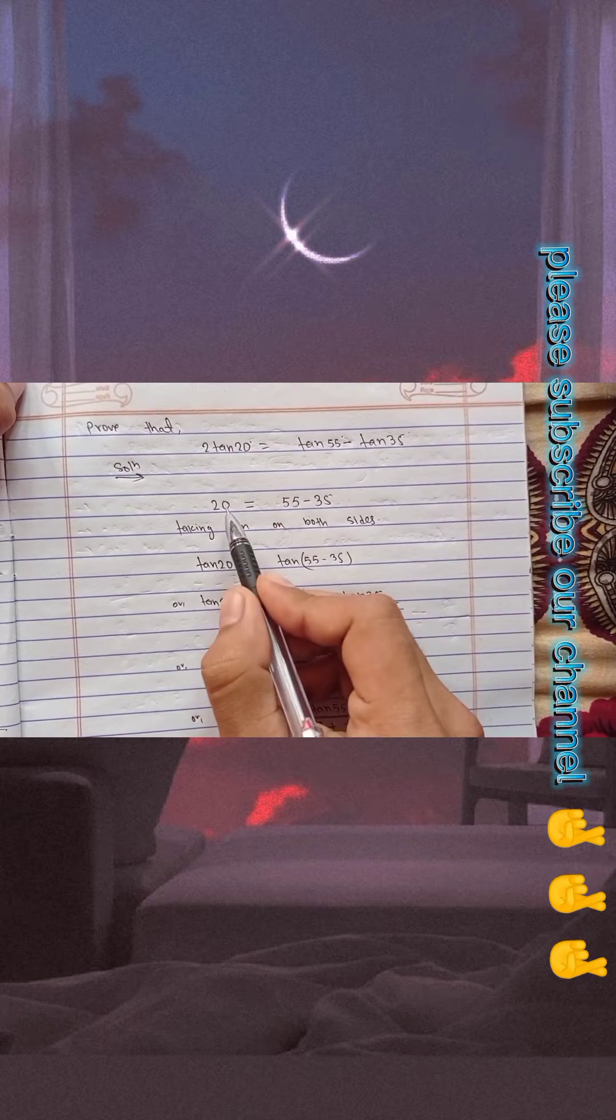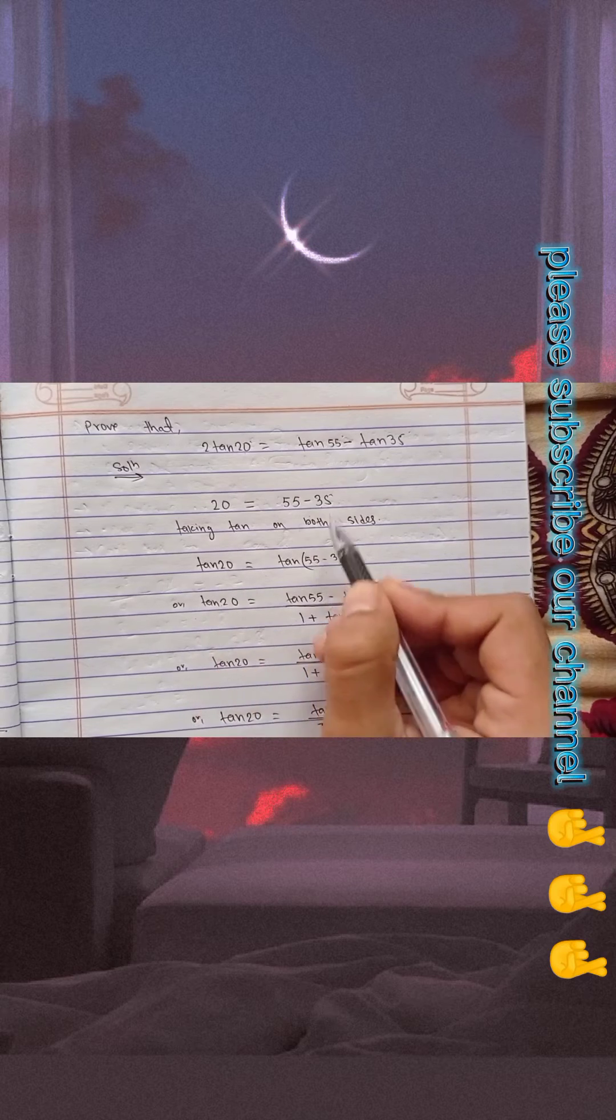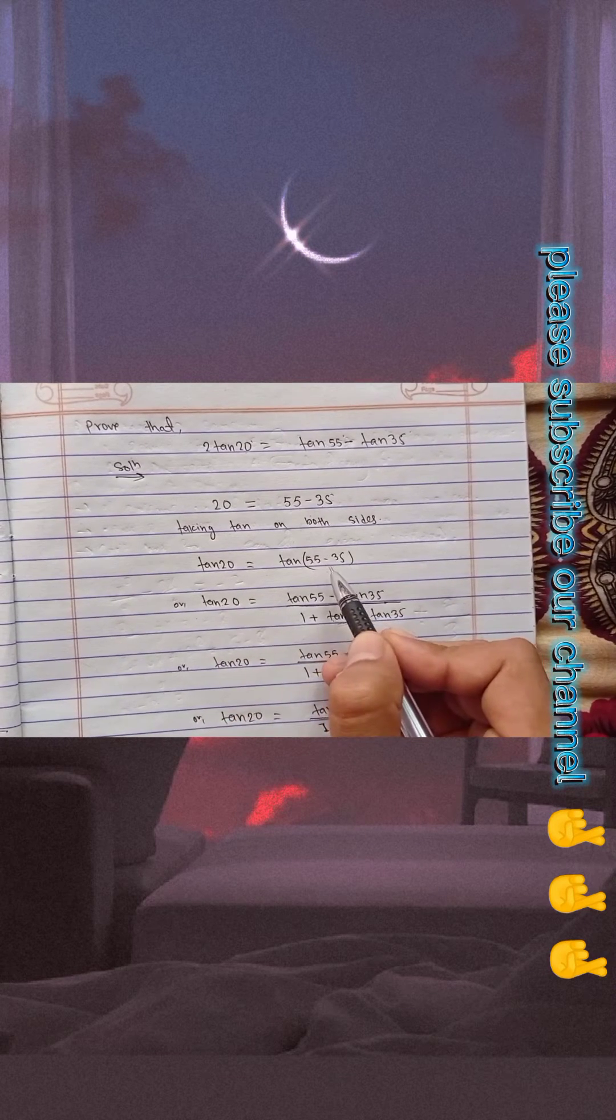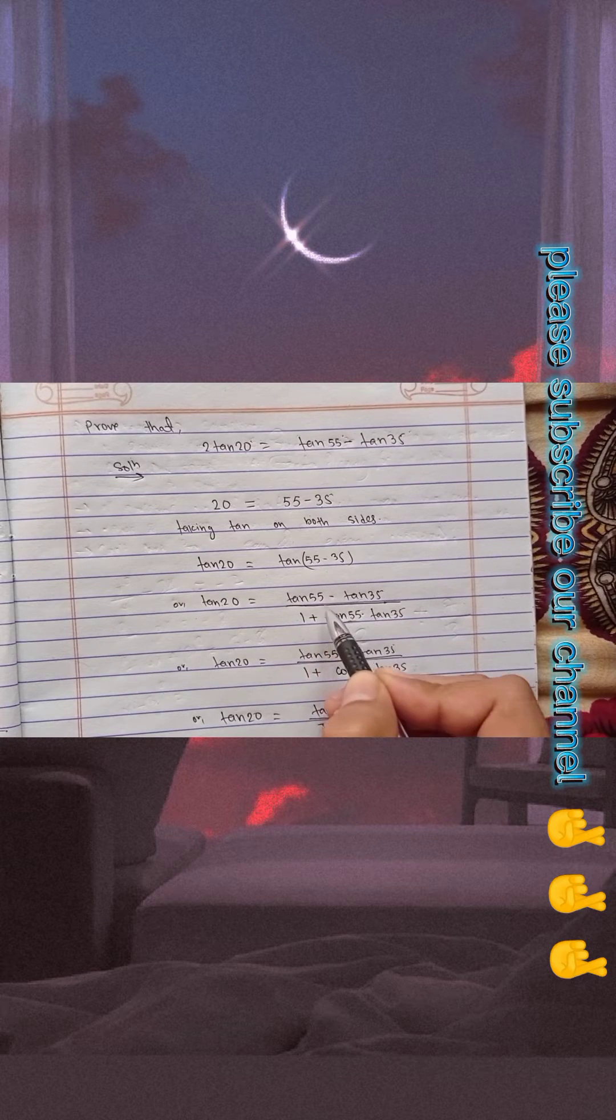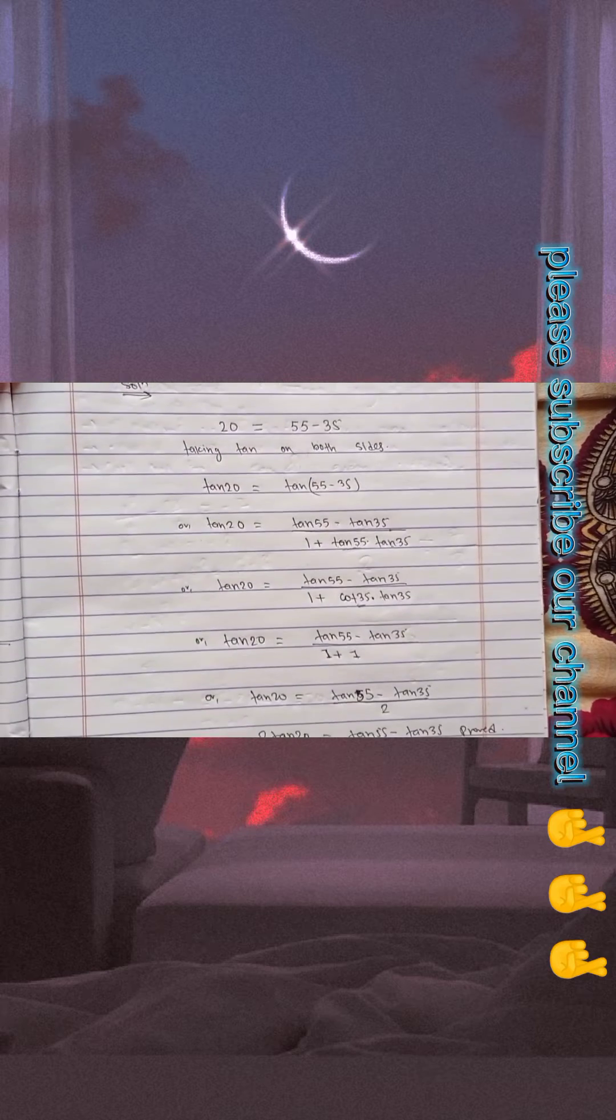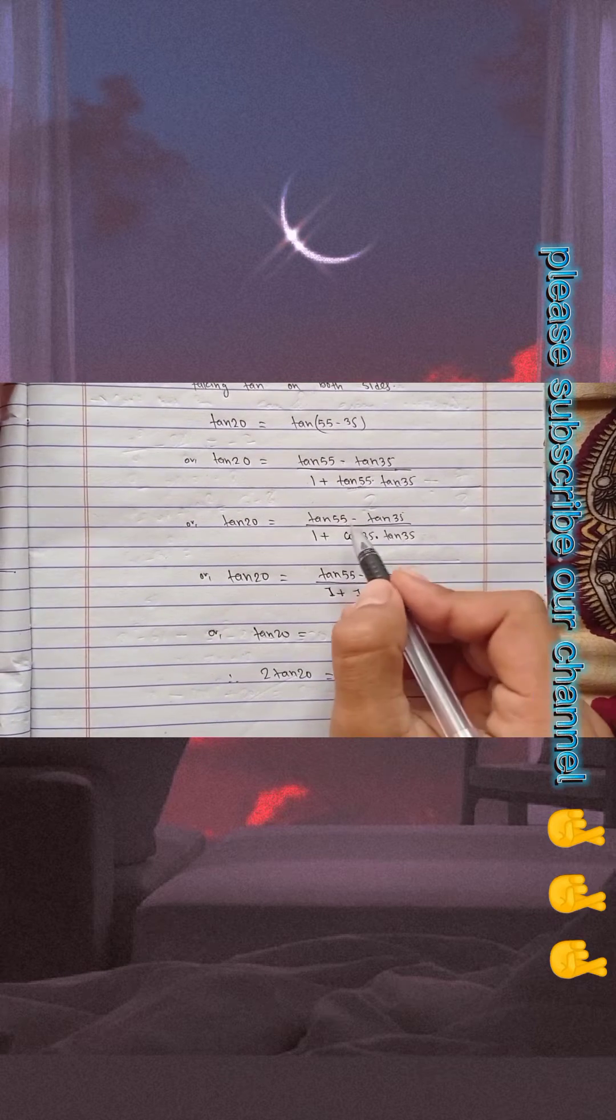Taking tan on both sides, if you take tan on both sides, this would become tan20° and this would become tan(55° - 35°). In the next step, just apply the formula tan(a - b), that is tana minus tanb upon 1 plus tana into tanb.